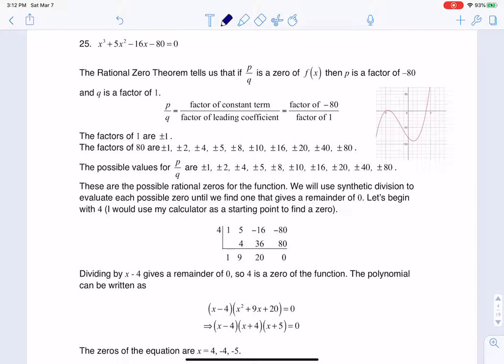So technically, the rational zero theorem means you take all the factors of the constant and put them in ratio to all the factors of your lead coefficient. That's how you would start to make a list of all the possible rational roots.